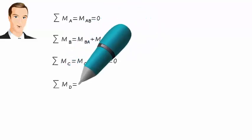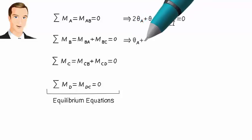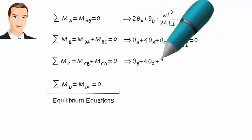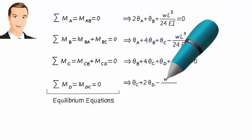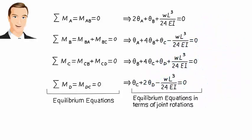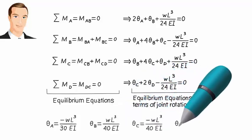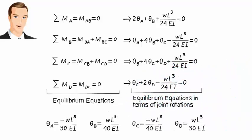Substituting the slope-deflection equations into the equilibrium equations, we get four equations in terms of the four joint rotations. Solving these equations, we get the joint rotations in terms of the applied load magnitude w, member length L, and section and material properties EI.